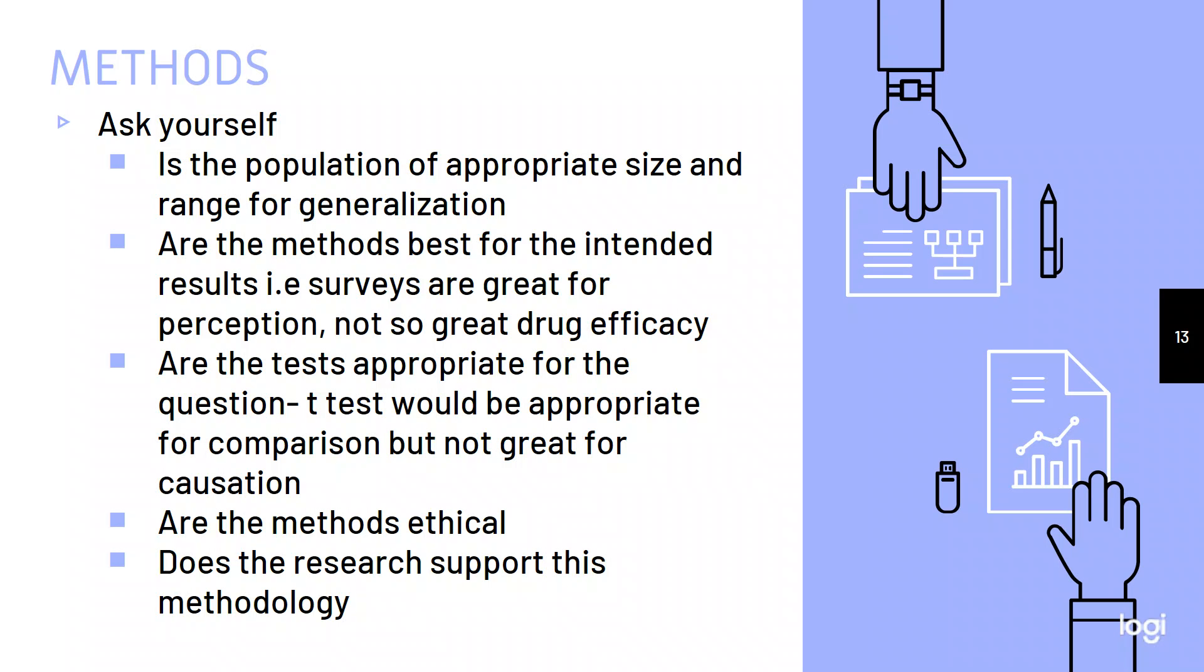So when you're looking at methods, you want to ask yourself, is the population of appropriate size and range for generalization? This is one of the issues that we see in a lot of medical trials, right? They're only choosing white men of a certain socioeconomic level and then they're trying to generalize that population to all ethnicities and all genders and it doesn't work. Are the methods best for your intended results? If you're trying to figure out if a drug is effective, surveys are probably not your best bet. If you're trying to figure out if a drug has horrible side effects, surveys may be part of what you use. So you want to ask yourself, are the methods actually appropriate for what you're trying to figure out?